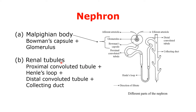Renal tubules have four parts: first is the proximal convoluted tubule, then the loop of Henle, then the distal convoluted tubule, and finally the collecting duct.